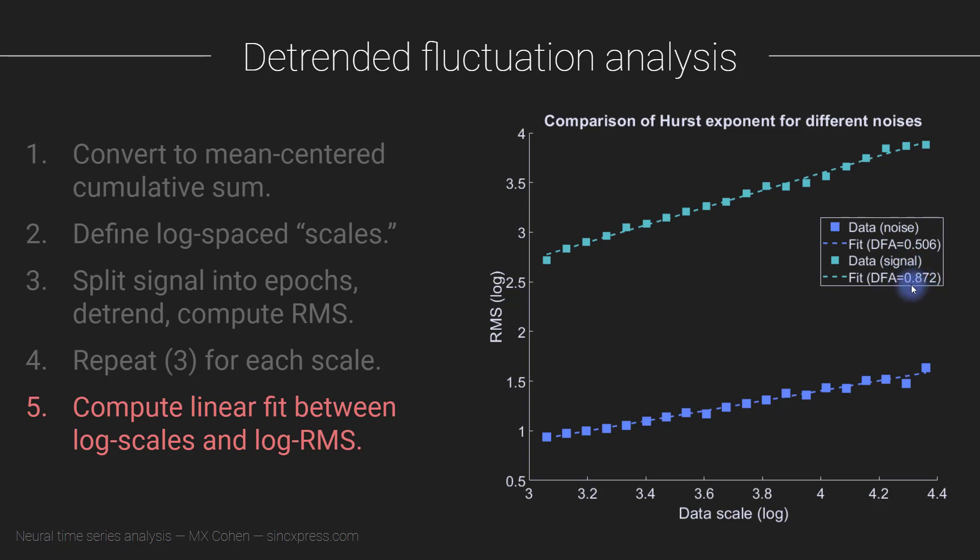So this is indicative of a system that is in a critical state. And this is actually an interesting value here, 0.87, because when you look in the literature, in the neuroscience literature, you will find that Hurst exponents from exactly computed based on exactly this analysis description here, they tend to be somewhere around 0.7, 0.8, 0.9. So this is a pretty typical value that you see across a large range of data sets and individuals.